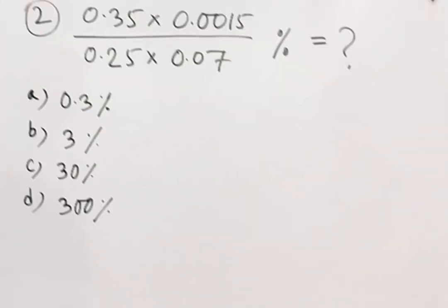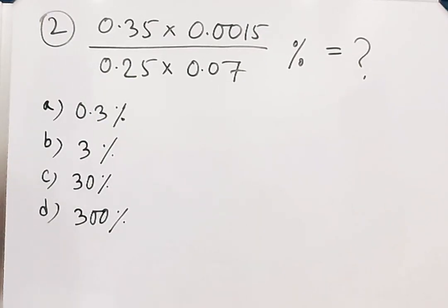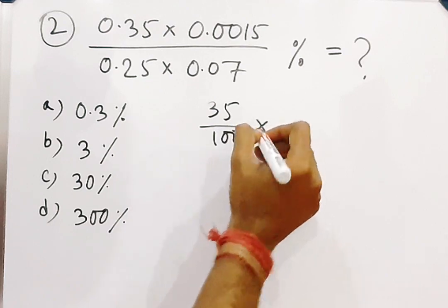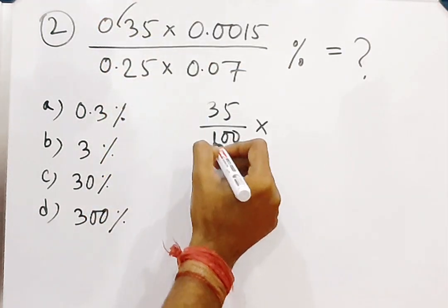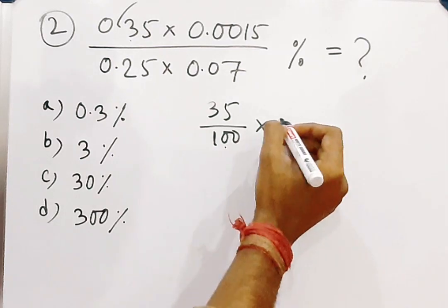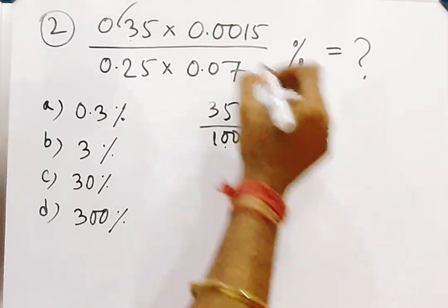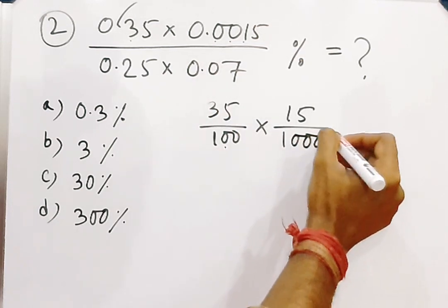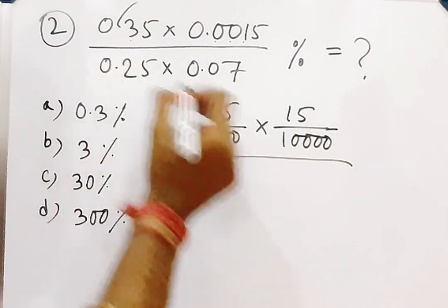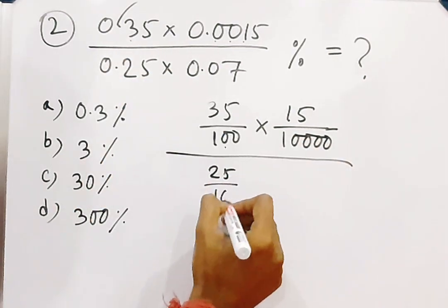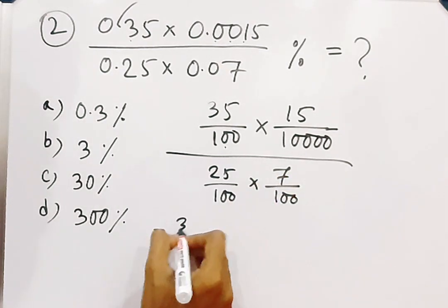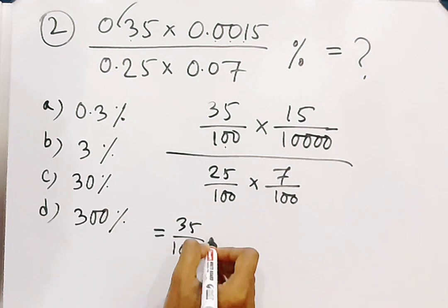Next question is 0.35 × 0.0015 by 0.25 × 0.07 equals question mark. So 0.35 means 35 by 100. For 0.0015, after the decimal point there are four digits, so it becomes 15 by 10000. And 0.25 means 25 by 100, and 0.07 means 7 by 100.